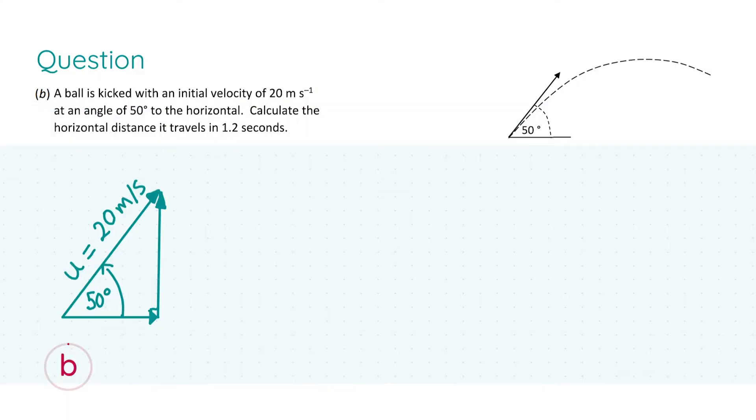For part b we are told that a ball is kicked with an initial velocity of magnitude 20 meters per second at an angle of 50 degrees to the horizontal. Calculate the horizontal distance it travels in 1.2 seconds and we're given a little diagram showcasing the projectile, i.e. the ball. So we're given the magnitude of the initial velocity, the time, and the direction of the velocity.